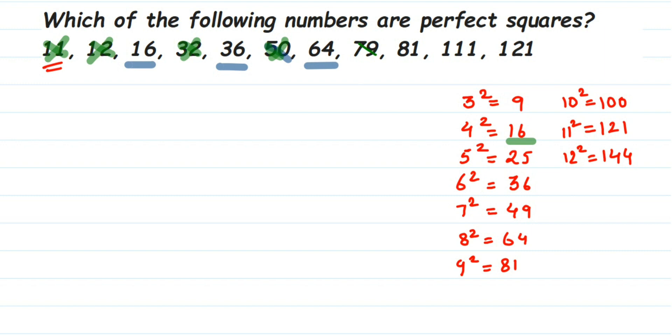Next we have 81. 81 is the square of 9, 9 square is 81, so we can say that 81 is a perfect square number.